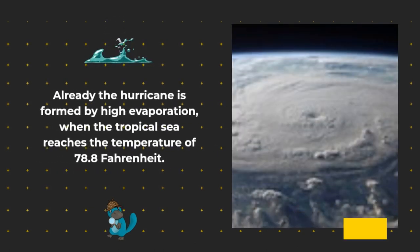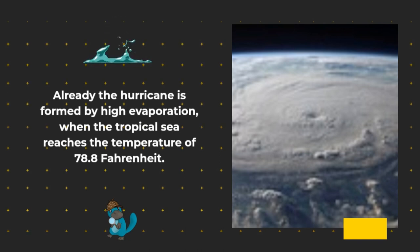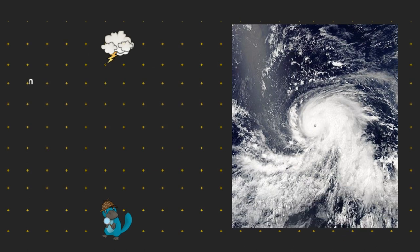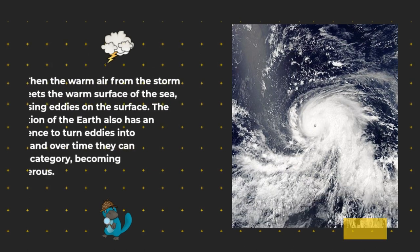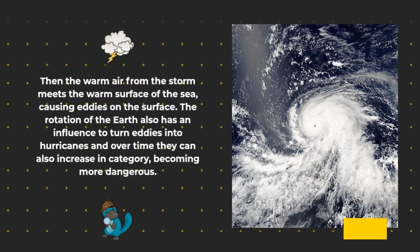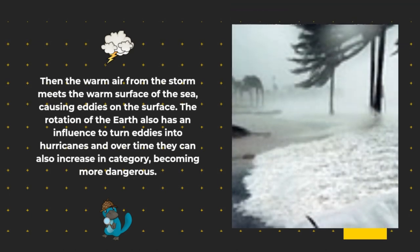A hurricane is formed by high evaporation when the tropical sea reaches a temperature of 78.8 degrees Fahrenheit. Then the warm air from the storm meets the warm surface of the sea, causing eddies on the surface. The rotation of the earth also has an influence in turning eddies into hurricanes, and over time they can increase in category, becoming more dangerous.